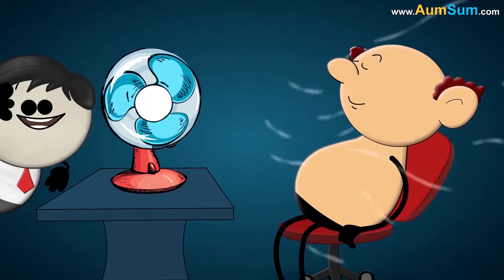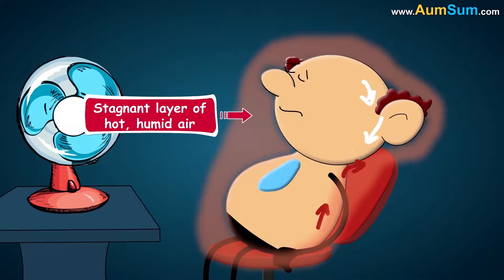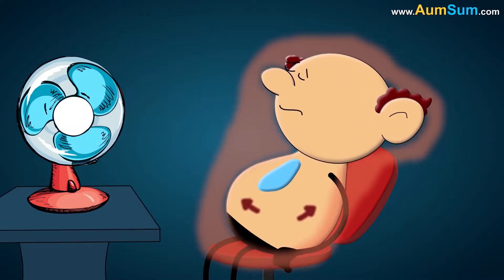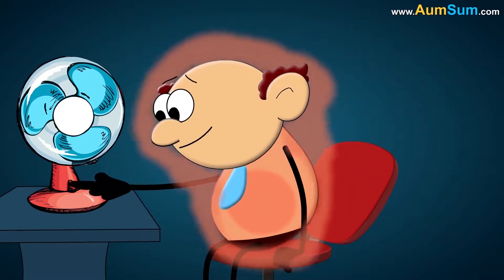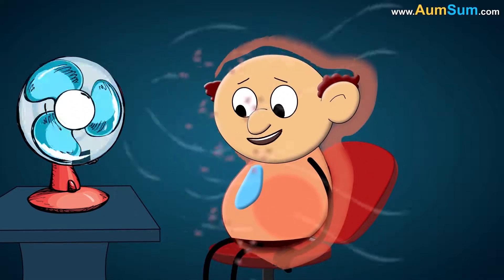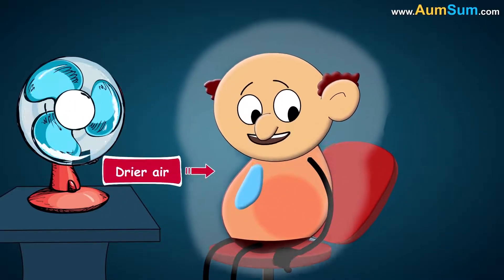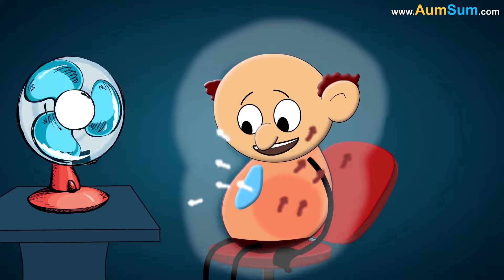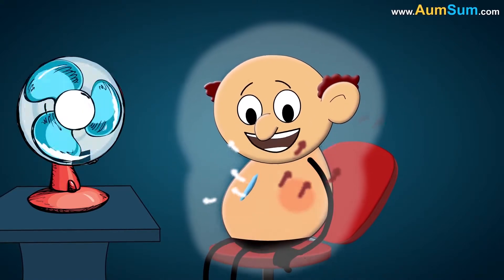Now, without a fan, both of these ways create a stagnant layer of hot humid air around our skin, thus making it difficult to continue the processes of convection and evaporation. However, when we switch on the fan, it blows away the stagnant layer of hot air and replaces it with a relatively drier air, allowing the processes to continue and thus, we lose more heat and cool down faster.